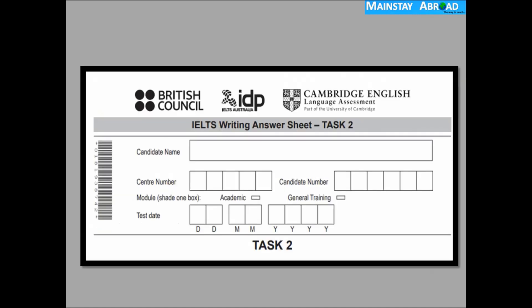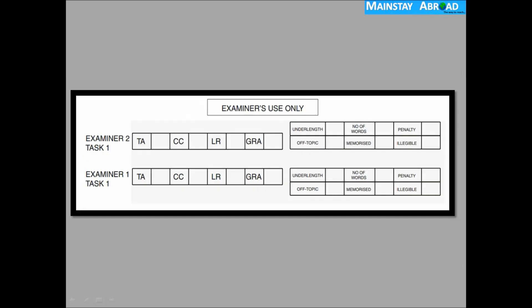When you are given the answer sheet, the first heading requires you to fill in your candidate's name, centre name, and candidate number. You choose whether you belong to academic or general training, then the date. At the end of the paper you can find an 'Examiners Use Only' section. TA means Task Response, CC means Coherence and Cohesion, LR means Lexical Resource, and GR means Grammatical Range and Accuracy.